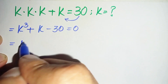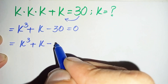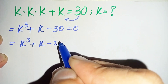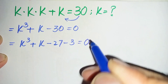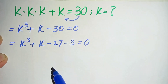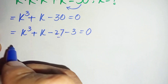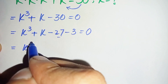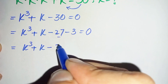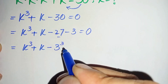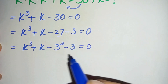Next, we split 30 into the sum of 27 plus 3, so k cube plus k minus 30 can be written as k cube plus k minus 27 minus 3, because minus 27 minus 3 gives minus 30. Now we will change 27 to cubic form, so 27 becomes 3 cube.